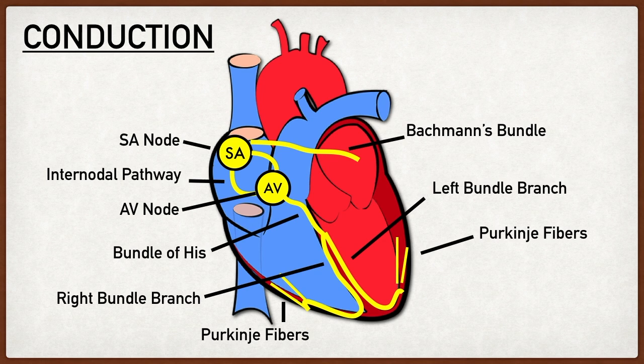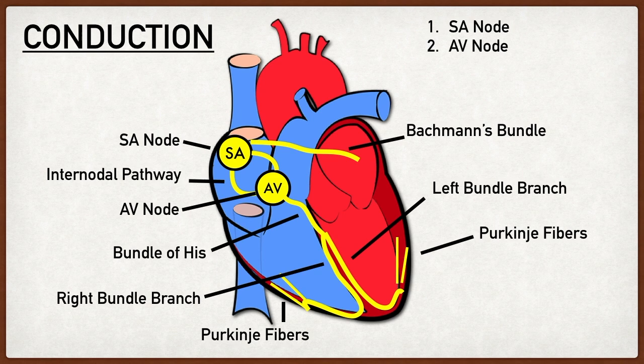Let's briefly recap the main components of the intrinsic conduction system. We started with the SA node, located in the back of the right atrium near the superior vena cava, producing action potentials at approximately 60 to 100 beats per minute. This action potential traveled to the left atrium using Bachmann's bundle and through the right atrium using the internodal pathway, leading to atrial depolarization and contraction.